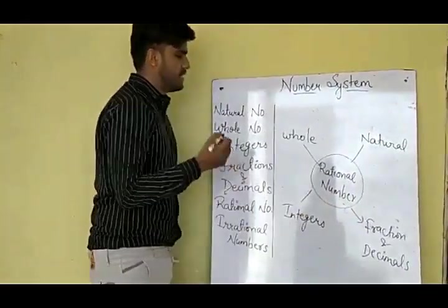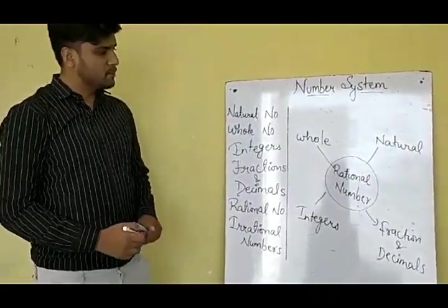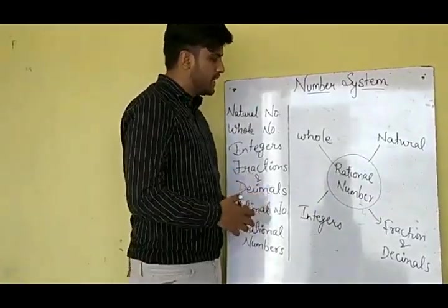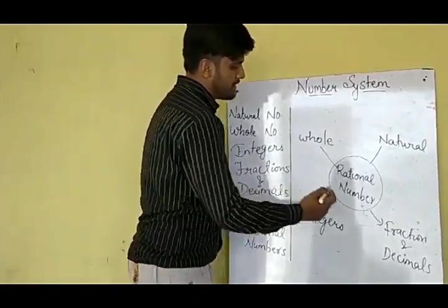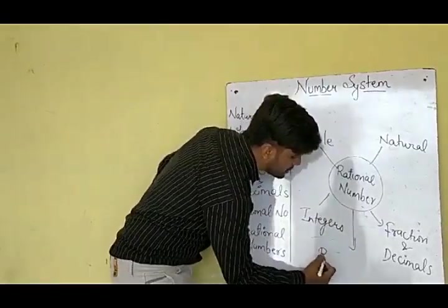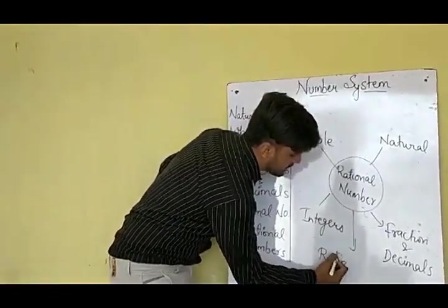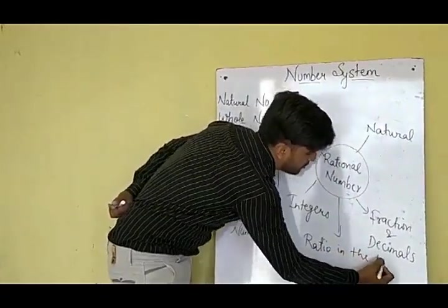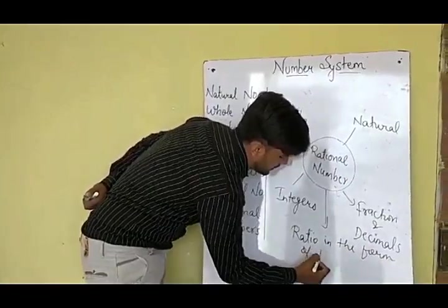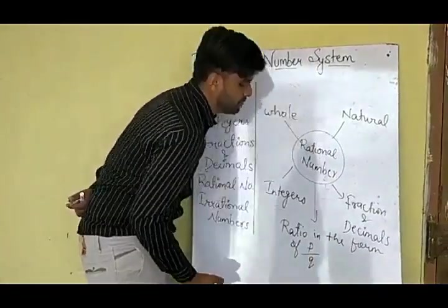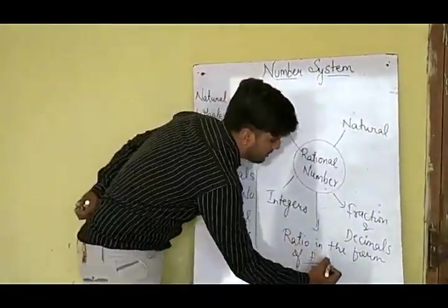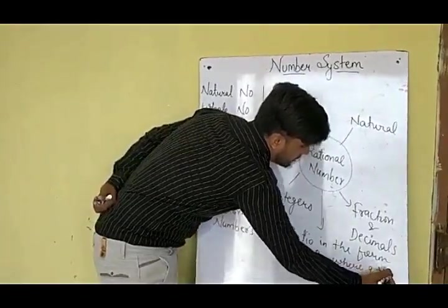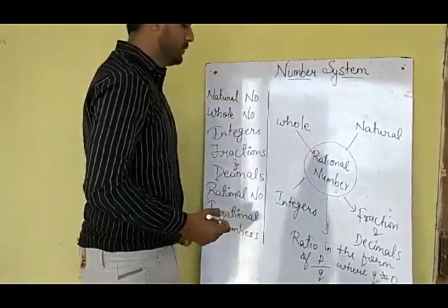Now, what is a rational number? Rational number is nothing but a ratio — a number expressed in the form of p upon q. The value of q must not be equal to 0.